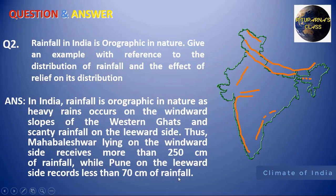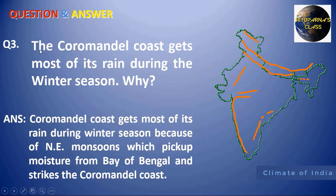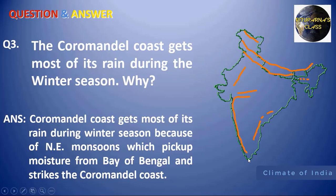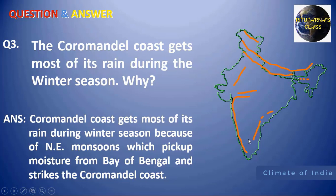Next question: the Coromandel Coast gets most of its rain during the winter season. Why? During the winter season, the wind comes from the northeastern side and crosses the Bay of Bengal, picking up moisture, and brings rainfall over the Coromandel Coast. But during monsoon time, the Coromandel Coast is situated on the leeward side of the Western Ghats, so it doesn't get enough rainfall. That's why the Coromandel Coast receives its maximum rainfall during winter.